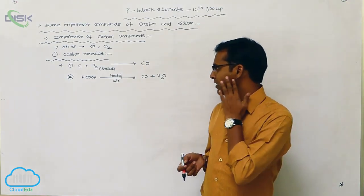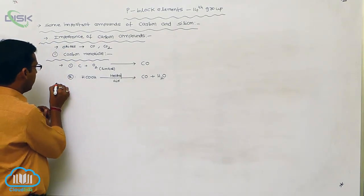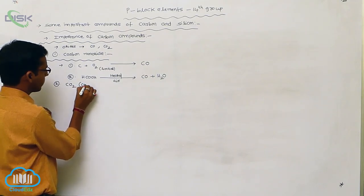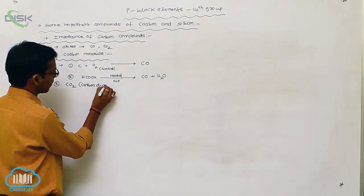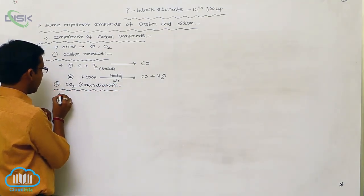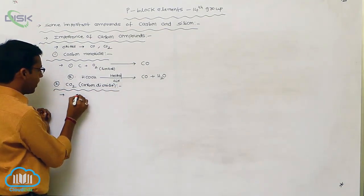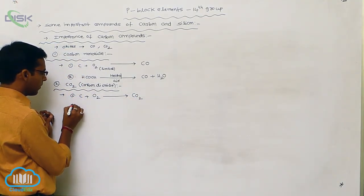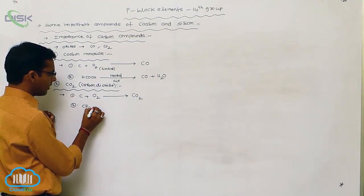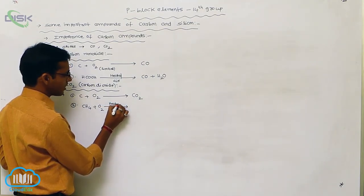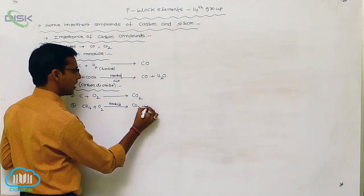Next one is carbon dioxide. Carbon dioxide is prepared when carbon is reacted with oxygen, forming CO2, or the hydrocarbon methane is heated in the presence of oxygen, converting to carbon dioxide and water.